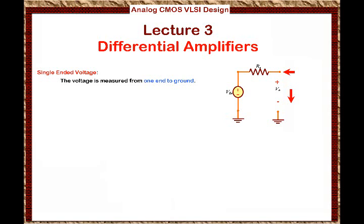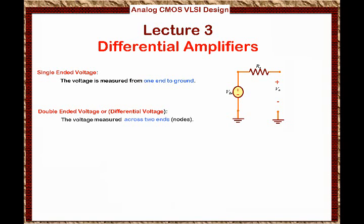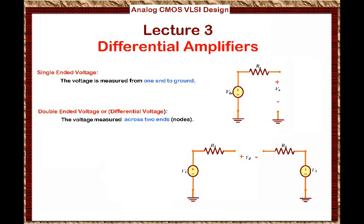On the other hand, double-ended voltage or differential voltage is the voltage measured across two ends or two nodes. So if you look at this circuit, for example, we have a voltage source V1 connected to a resistor R1 and the voltage source V2 connected to a resistor R2. And we are interested in the voltage between these two ends — that's the differential voltage.